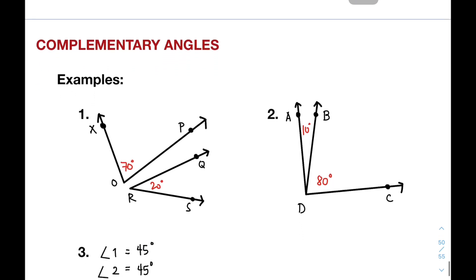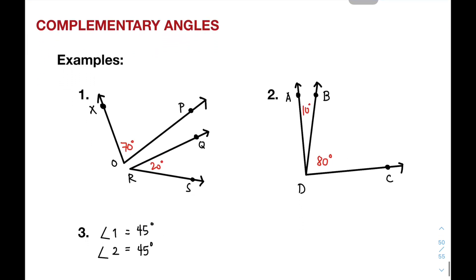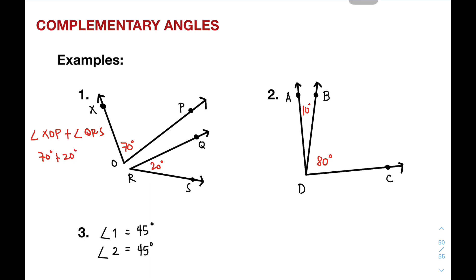Let's move on with more examples to become more familiar with how to classify whether two angles are complementary or not. We have the measurement of angle XOP equal to 70 degrees, while the measurement of angle QRS is equal to 20 degrees. When we add them, 70 degrees plus 20 degrees equals 90 degrees. Definitely, these two angles are complementary angles.